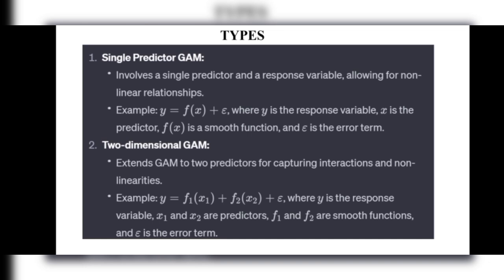The second type is the Two-Dimensional GAM. As the name suggests, it has two predictors. It extends GAM to two predictors for capturing interactions and non-linearities. The example formula is: y = f₁(x₁) + f₂(x₂) + ε, where y is the response variable, x₁ and x₂ are predictors, f₁ and f₂ are smooth functions, and ε is the error term.